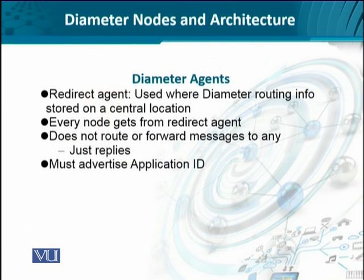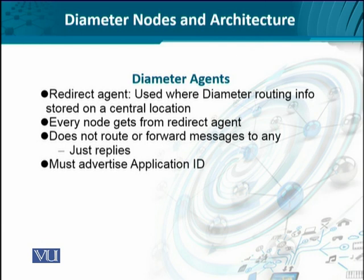Then we have the redirect agent. It is used where routing information is not stored with the relay agent or proxy agent, but rather on a central location. Every node — whether a proxy agent or relay agent — must consult the redirect agent. The redirect agent does not forward or relay information to any peer; instead, it simply replies with information indicating to whom the information should be forwarded. Like the relay and proxy agents, the redirect agent also needs to advertise its own application ID.